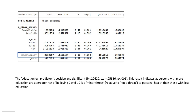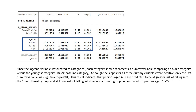The education level predictor is positive and significant, indicating that persons with more education are at greater risk of believing COVID-19 is a minor threat relative to not a threat. Since age cat was treated as a categorical variable, each category represents a dummy variable comparing an older group to the youngest (18–29) category. Although slopes for all three dummy variables were positive, only the 65 plus group was statistically significant, indicating that persons aged 65 plus are at greater risk of falling into the minor threat group compared to those aged 18–29.